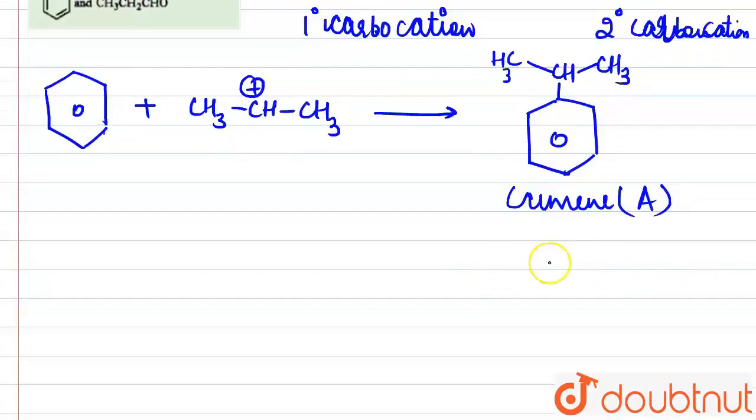Now we have to do further reaction of cumene with O2. So what will happen with O2? Oxidation will take place, so the oxidation of this carbon will occur. So the product formed here will be benzene ring, here one carbon CH3, here another methyl group, and here oxidation takes place.